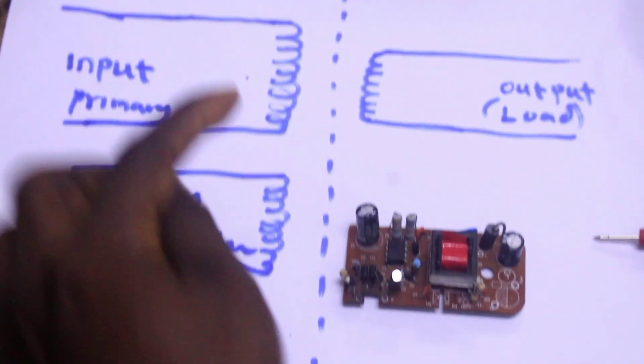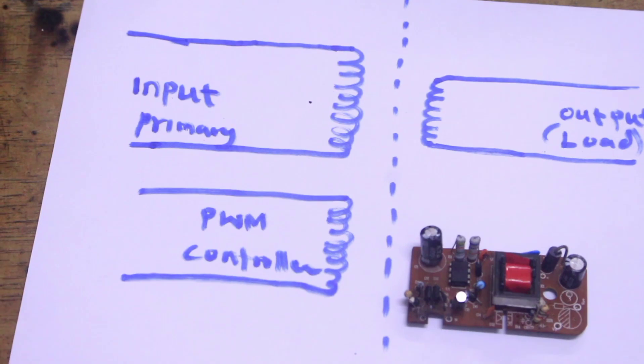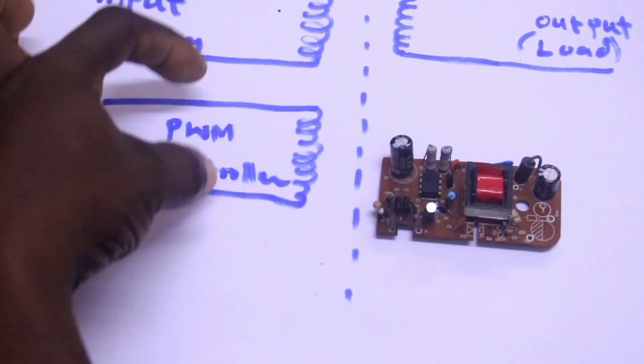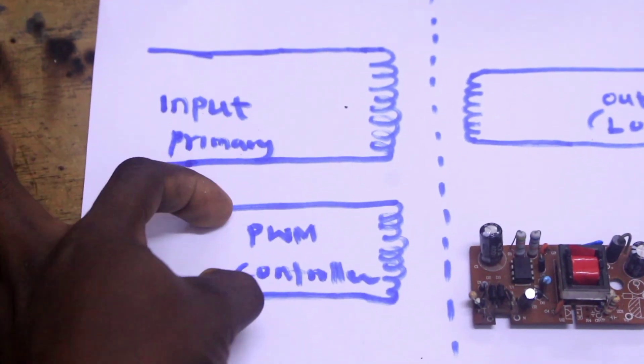It consists of the input winding which is connected to the supply and the output winding which is connected to the load and there is an auxiliary winding. This auxiliary winding is used to power the PWM controller.